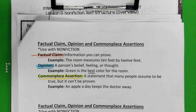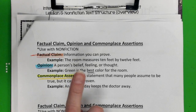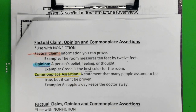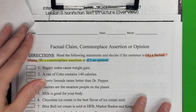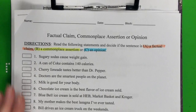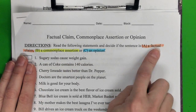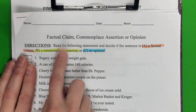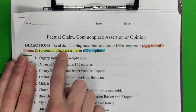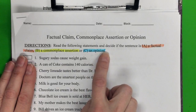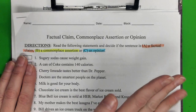Let's look at our worksheet for today. You should have a small copy — a three-quarter length sheet — and you should have this sheet. On this sheet, I went ahead and highlighted factual claim in orange, commonplace assertion in yellow, and opinion in blue. You can use highlighters or colored pencils to underline either way.